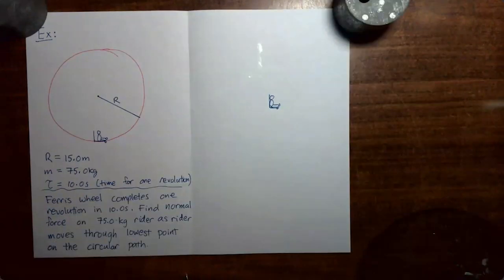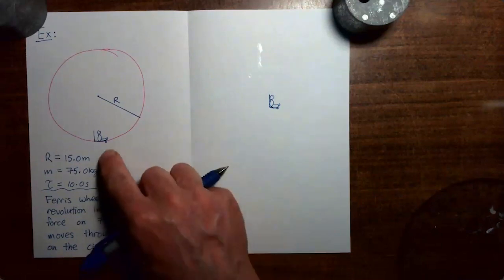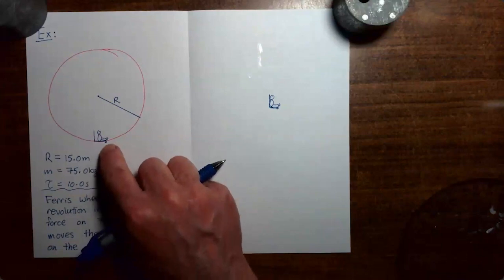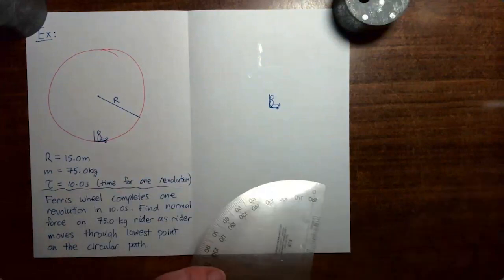Let's start as usual by drawing a force diagram for the rider. In the previous video, we already studied the force diagram for the rider at the bottom of the Ferris wheel, but I'll go ahead and recap that here.